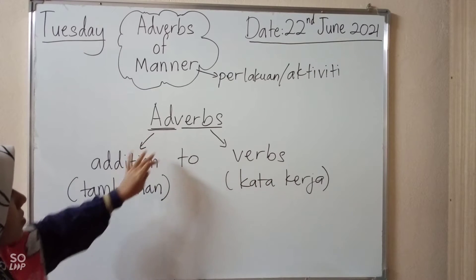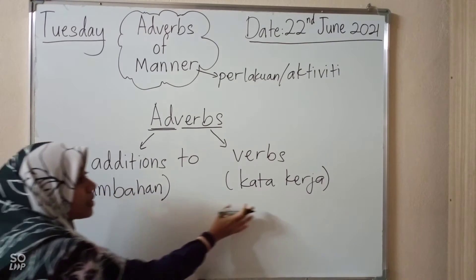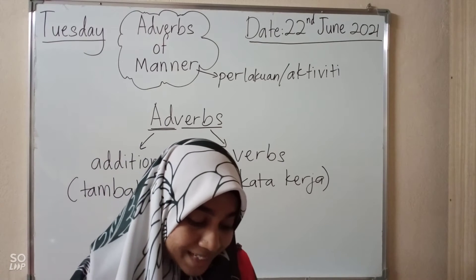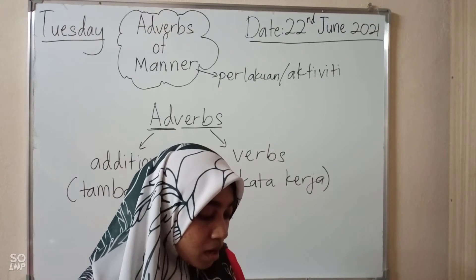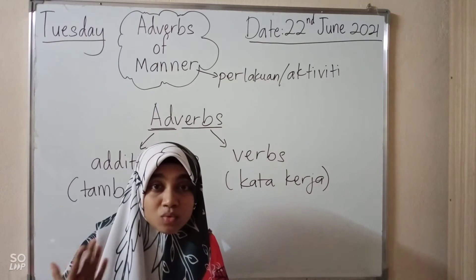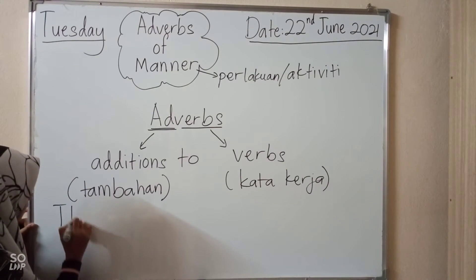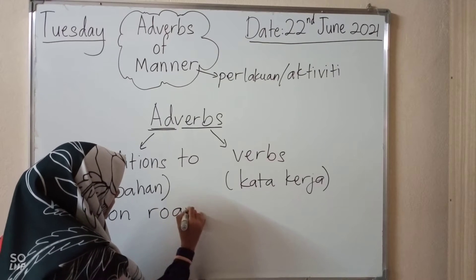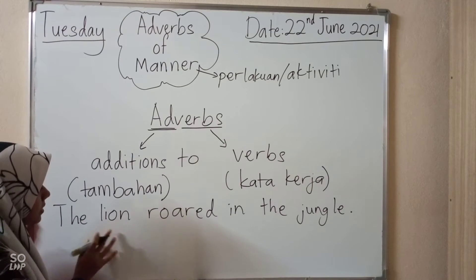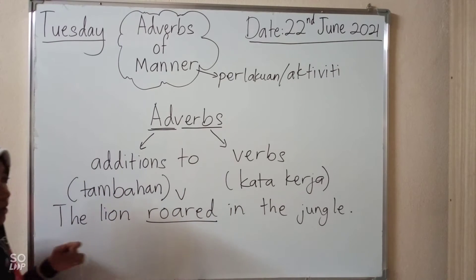The function of adverbs — adverbs adalah addition to verbs. Additions ni maksudnya tambahan — tambahan kepada kata kerja. Refer to the example given: 'The lion roared loudly in the jungle.' The word 'loudly' is the adverb. 'Roared' is the verb. Kalau tak ada 'loudly,' ayat tu still betul — the sentence is still correct: 'The lion roared in the jungle.'